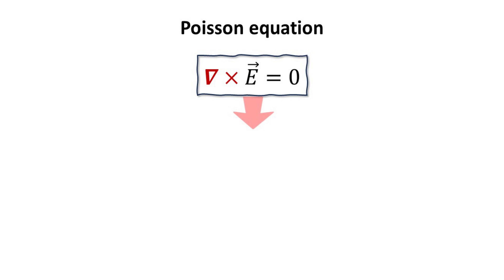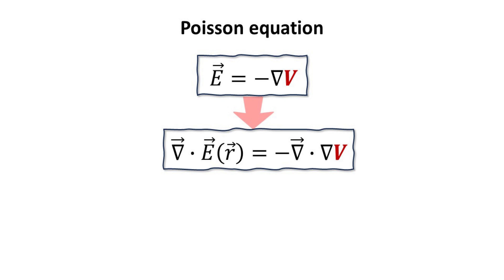We begin with Faraday's law which states that the curl of the static electric field is zero. This then allows us to express the electric field as a gradient of the scalar field V, called the electric potential. Let's next take the divergence on both sides of the equation. The left-hand side, which is the divergence of the electric field, is given by the charge density according to Gauss's law.